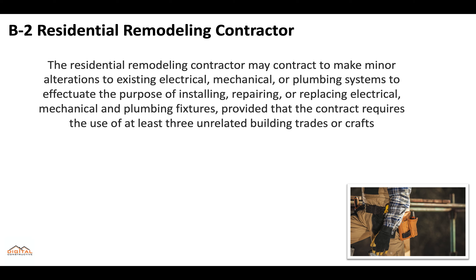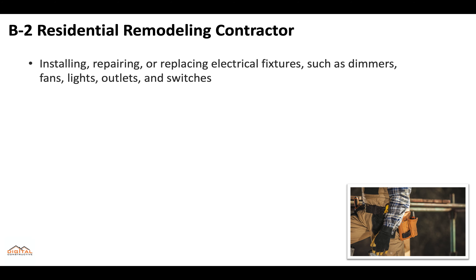The residential remodeling contractor may also contract to make minor alterations to existing electrical, mechanical, or plumbing systems to effectuate the purpose of installing, repairing, or replacing electrical, mechanical, and plumbing fixtures, provided that the contract requires the use of at least three unrelated building trades or crafts. This means you would be able to install, repair, or replace electrical fixtures such as dimmers, fans, lights, outlets, and switches.